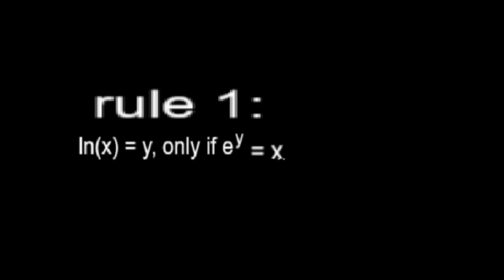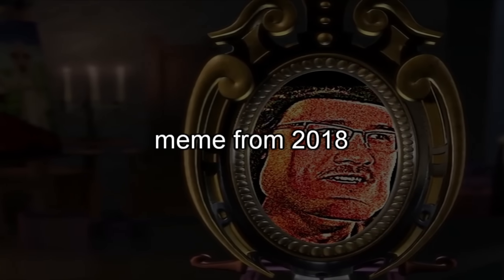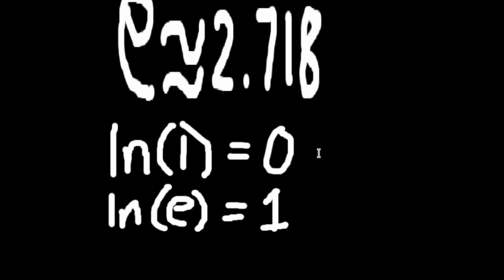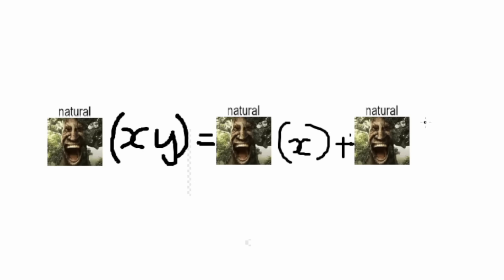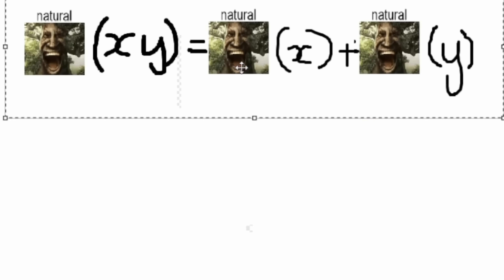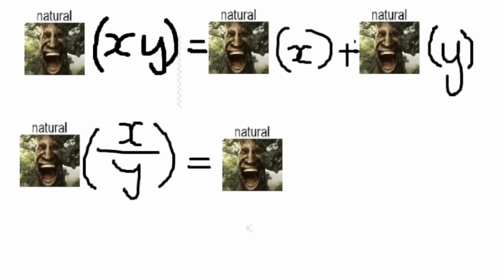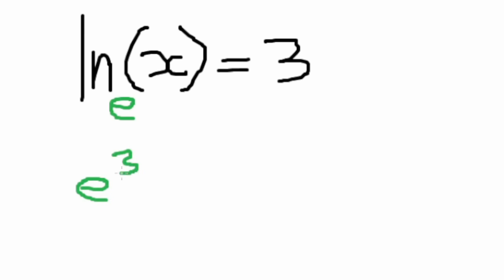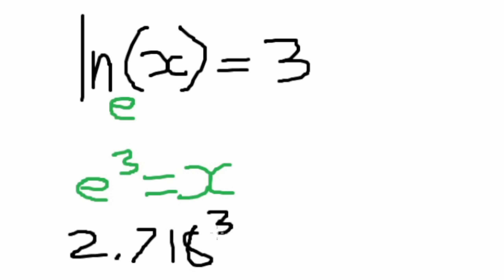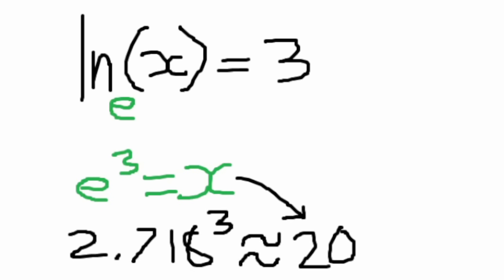The natural log of x equals y only if e to the power of y equals x. E is roughly equal to 2.718. The natural log of 1 equals 0, and the natural log of e equals 1. There is a thing called the product property which applies to both natural and normal logs — it states that the natural log of x times y equals the natural log of x plus the natural log of y. And the same goes for division: the natural log of x divided by y equals the natural log of x minus the natural log of y. Now let's say that the natural log of x equals 3. This is saying that x equals e to the third, so you literally just raise 2.718 to the third and you get x equals roughly 20. It's not that deep.